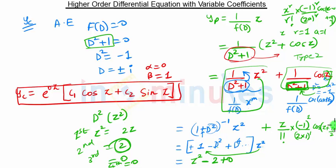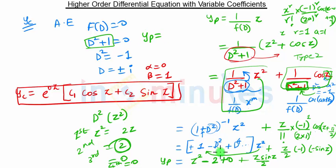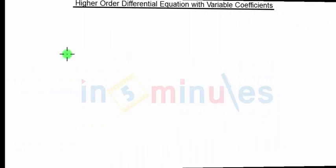Substituting r = 1: this gives z/(2) · cos(z + π/2). Now cos(z + π/2) = -sin(z), and multiplying by the existing negative gives a positive. So this term becomes z·sin(z)/2. Therefore yp = z² - 2 + z·sin(z)/2.